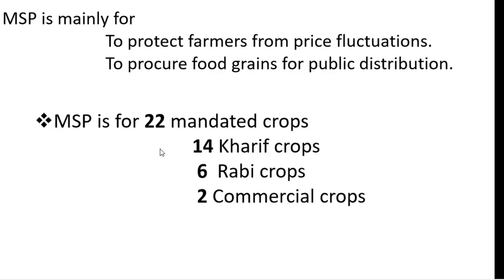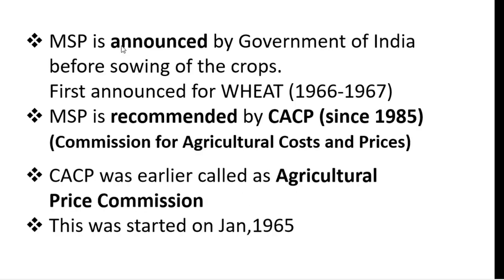The most important thing to remember is that Minimum Support Price is announced by the Government of India before the sowing of crops. MSP was first announced for wheat crop during the Green Revolution, in the year 1966 to 1967. MSP is recommended by CACP — which stands for Commission for Agriculture Costs and Prices.